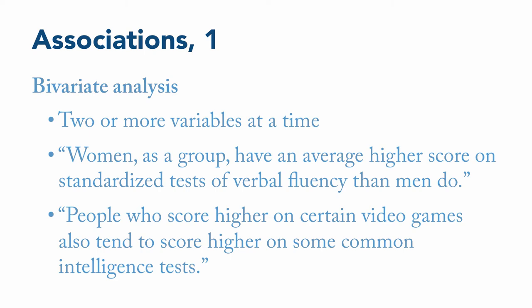As with univariate description, associations can be described for both samples and populations. There is, however, at least one important thing to keep in mind, and that is that the nature of the association between two variables, that is, the reason why there is an association between them, can be unclear.